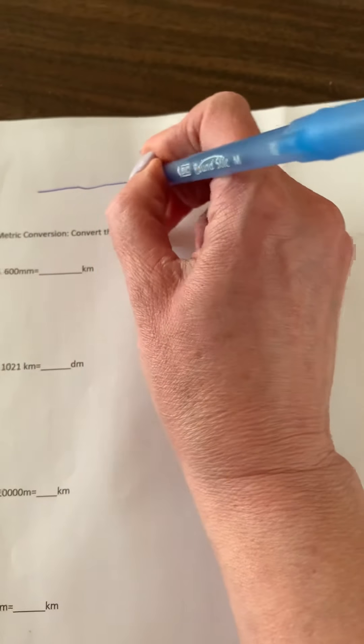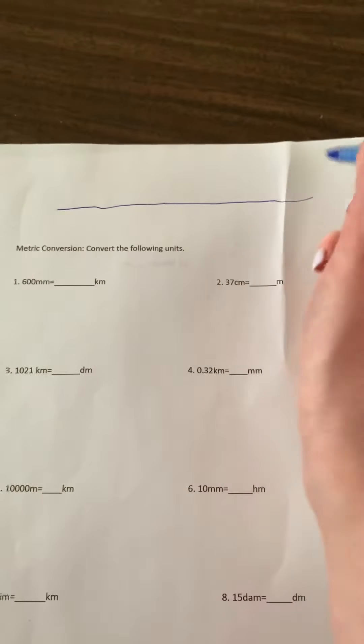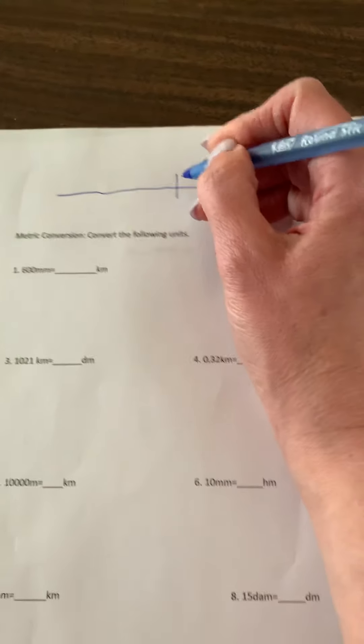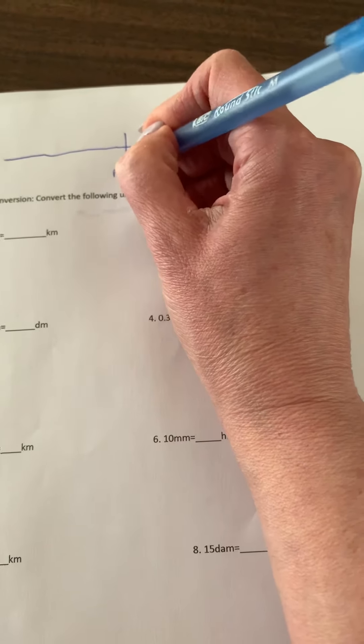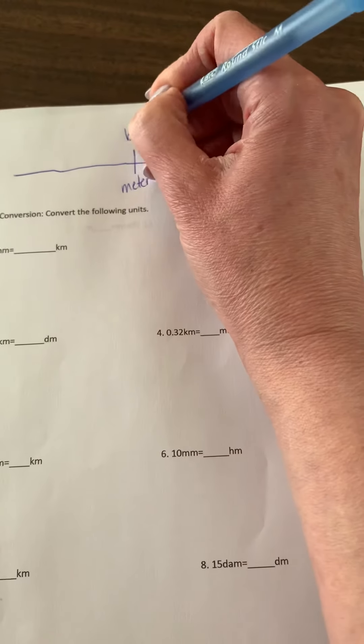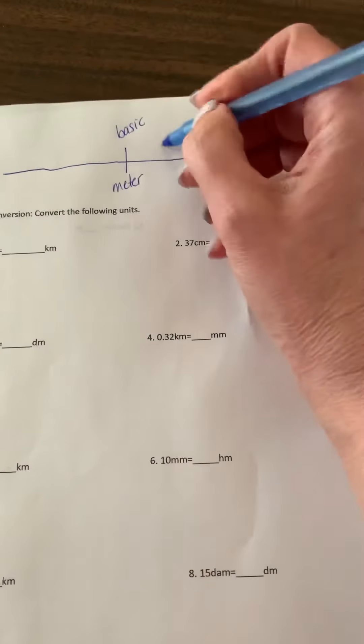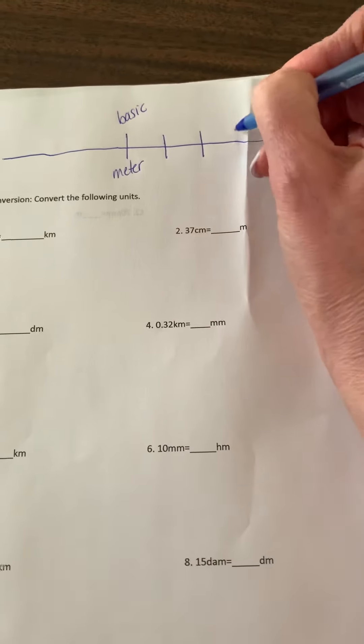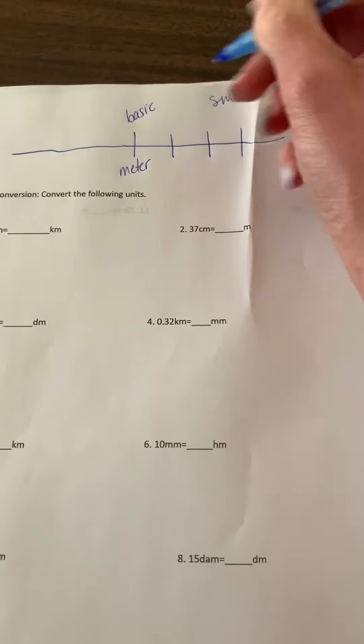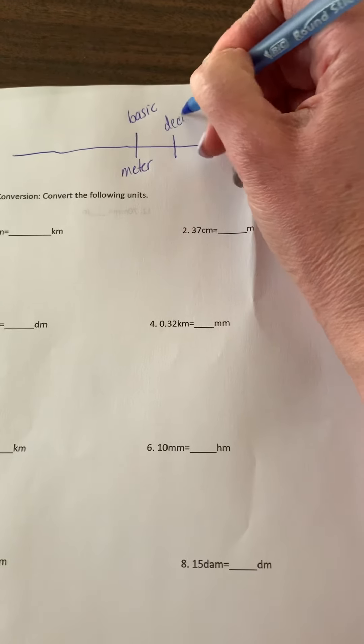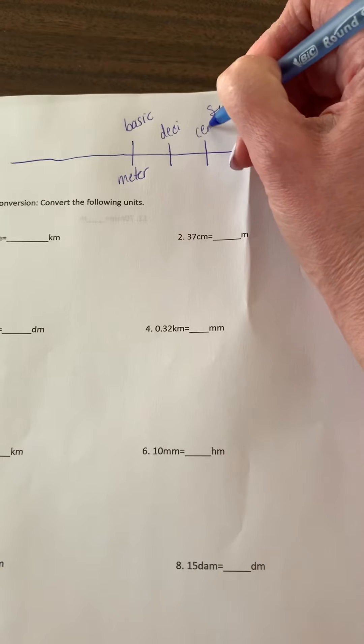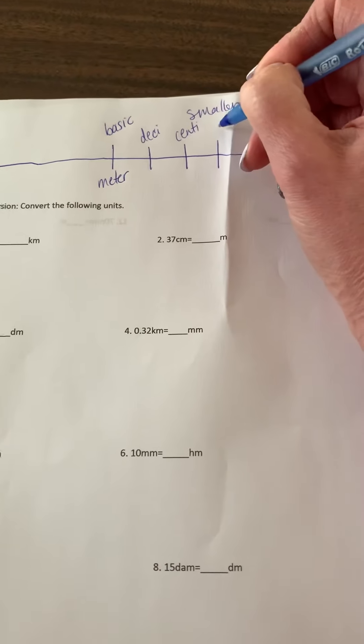So first thing you should have done is drawn that little line and then created your metric conversion chart. Remembering that in the middle are your basic units, and in this case because we're doing length it's going to be meter, and then on this side are going to be our smaller units. Remembering that they're deci,